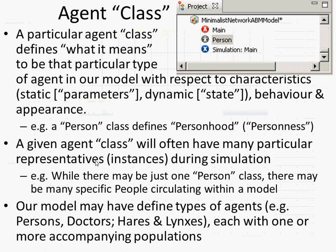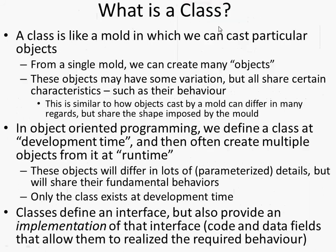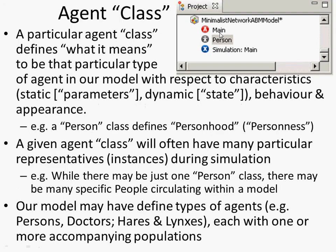A given person class will typically have many representatives — many persons circulating. It could be zero, one, or for the most part we'll typically have a population of agents circulating. You may have several types of agents: patients and doctors, persons and cities, etc. They'll all live within this space.